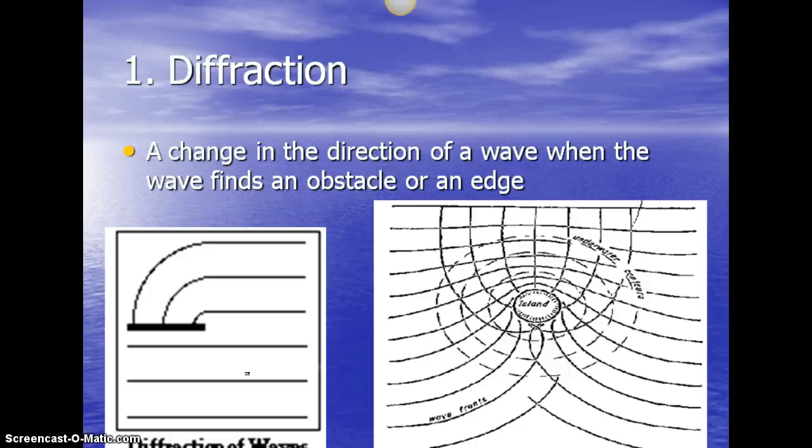Diffraction is when the wave bends around an object. So it goes around maybe a corner. So we hear sound waves around a corner because the waves will bend around that corner. So in this case, the wave is coming straight in. And then as it hits this barrier, it bends around the barrier.